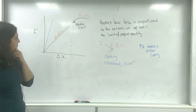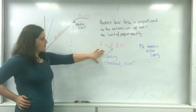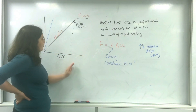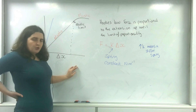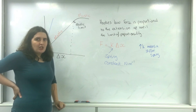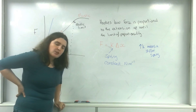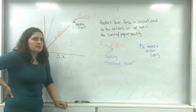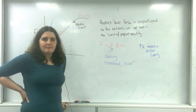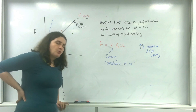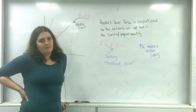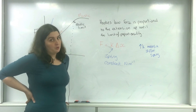So this spring constant equation is Hooke's Law, and it relates to this graph. One drawback of Hooke's Law is that if you change anything about the spring — its length, thickness, or material — you get a completely different graph. That's where we move on to Young's modulus later on. And that is Hooke's Law.